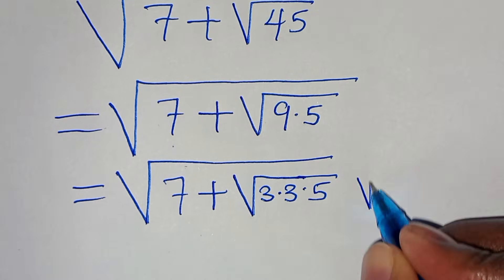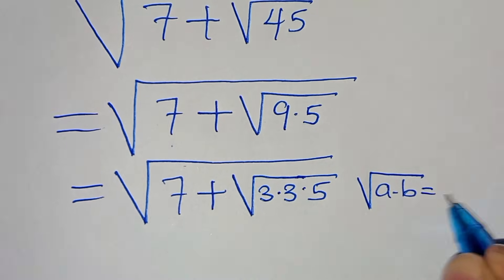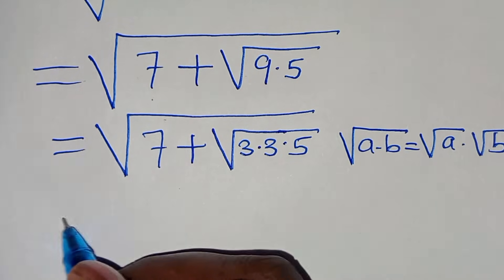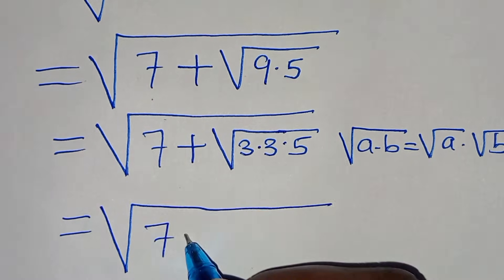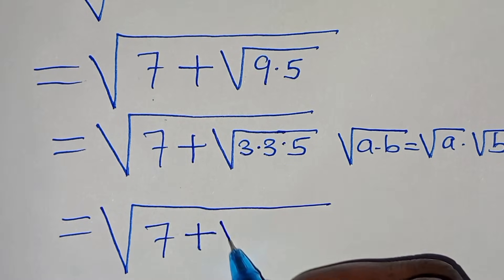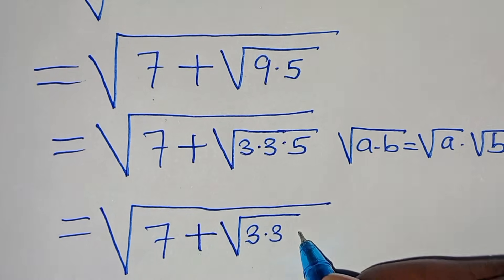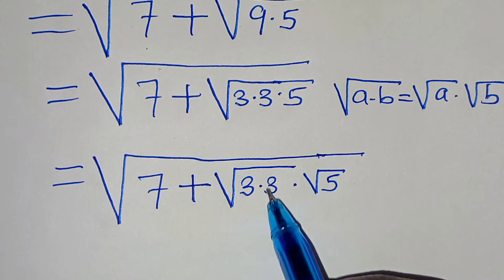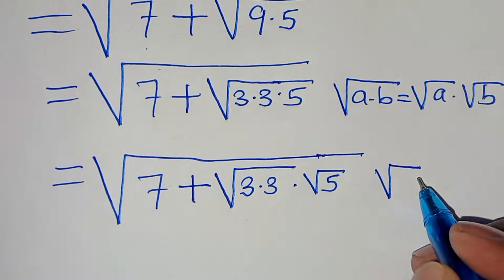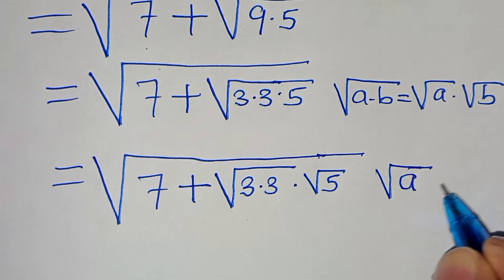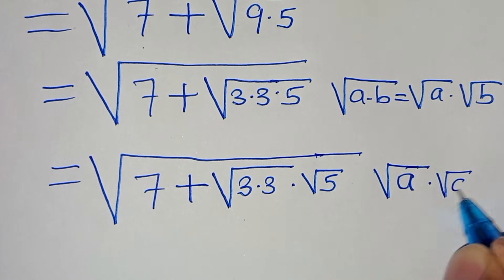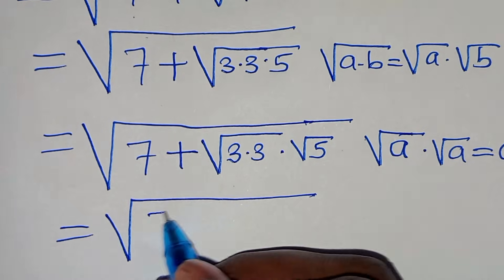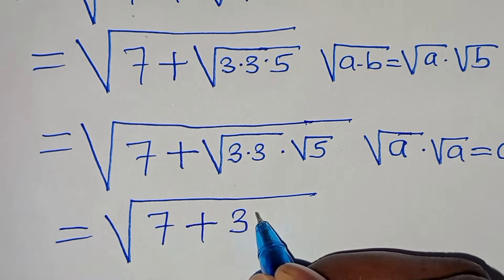The square root of 3 times 3 times 5 is in the form of square root of a times b, which we can express as square root of a times square root of b. Applying this property, we have the square root of 7 plus the square root of 3 times 3, times square root of 5. Since the square root of 3 times 3 equals 3, we have square root of 7 plus 3 square root of 5.